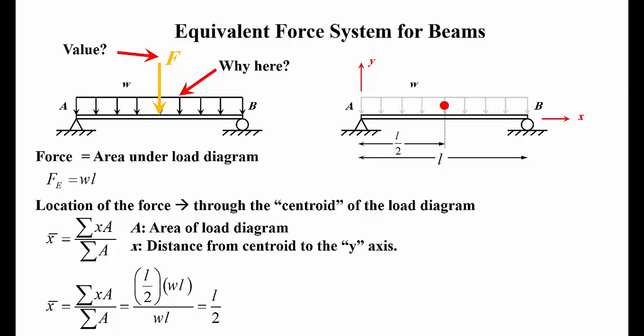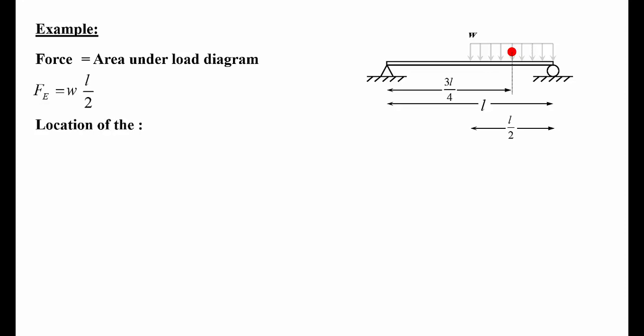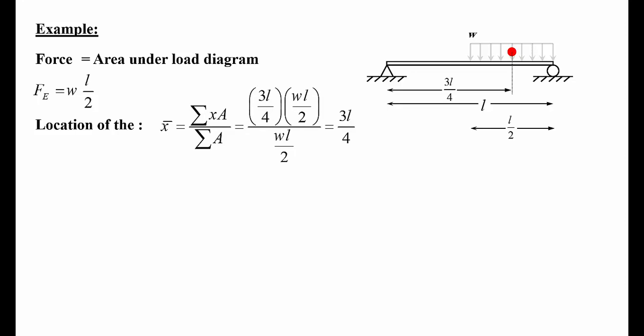Let's look at another example where the distributed load is only on the second half of the beam. The equivalent force is the area under the load diagram: F_E = W × (L/2). For the location, from geometry we already know it's 3L/4, but let's use the equation: X̄ = ΣxA / ΣA. Here X = 3L/4 and A = WL/2, divided by WL/2, and we indeed get 3L/4.